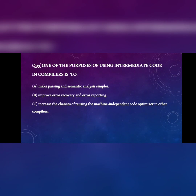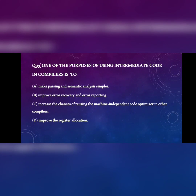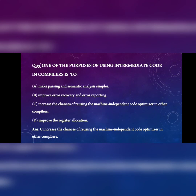Next question: one purpose of using intermediate code in a compiler is A) making parsing and semantic analysis simpler, B) improve error recovery and reporting, C) increase chances of reusing the machine-independent code optimizer in other compilers, D) improve register allocation. The compiler uses intermediate code to reuse code via the code optimizer. The answer is C.